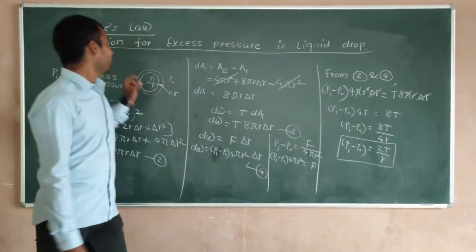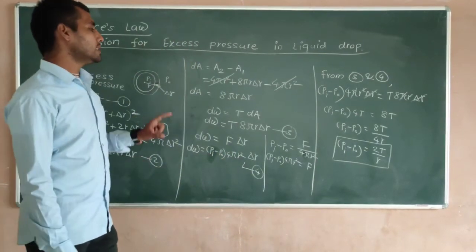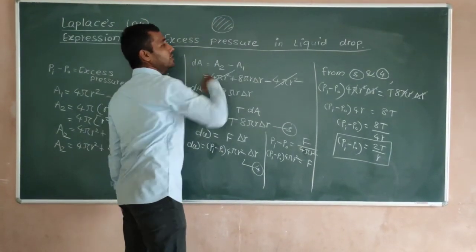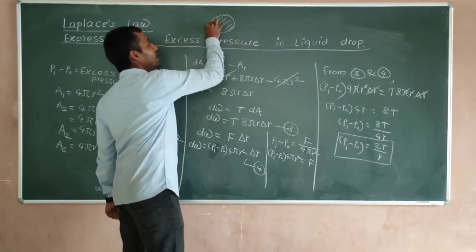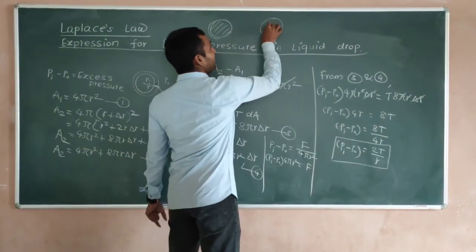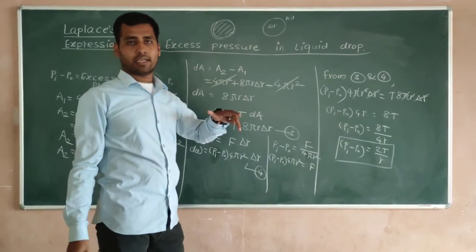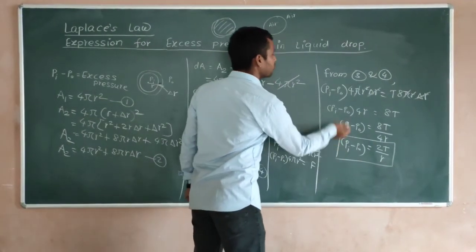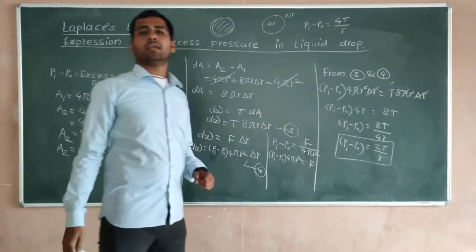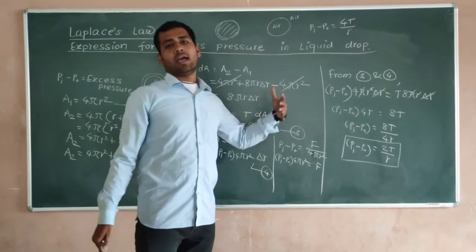This is the expression for the excess pressure inside a liquid drop. In a liquid drop, the interior is completely liquid with one outer surface layer in contact with the liquid. However, when we look at a soap bubble, we have to write the law as Pi − Po = 4T/r. In this way we can find the relation between excess pressure and surface tension, and this is Laplace's Law.